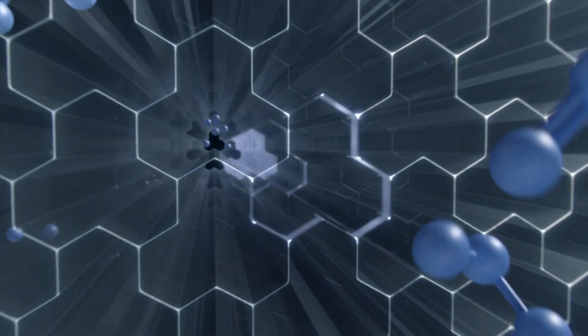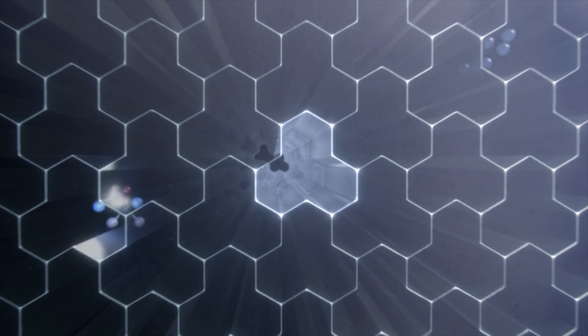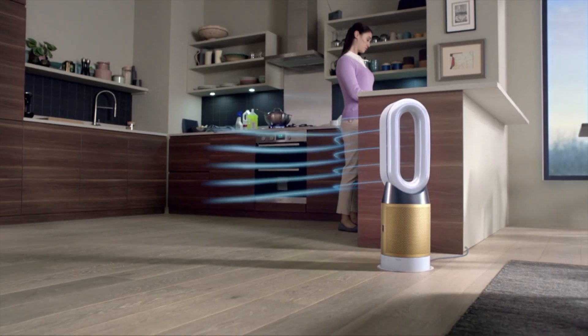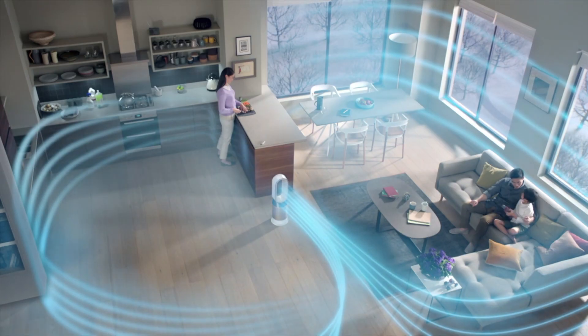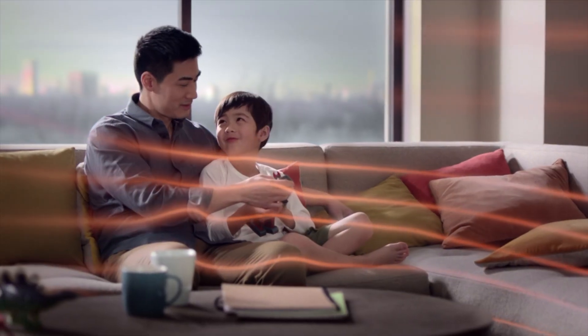The catalyst regenerates with oxygen from the air to destroy formaldehyde continuously. Then air multiplier technology projects over 290 litres per second to cool you or heat every corner of the room with purified air.